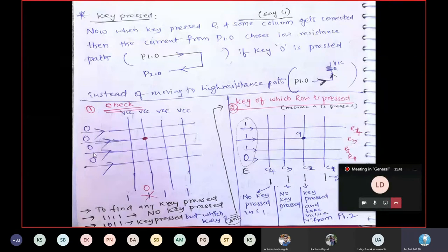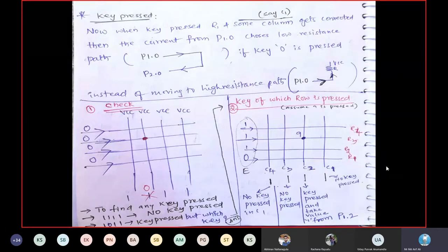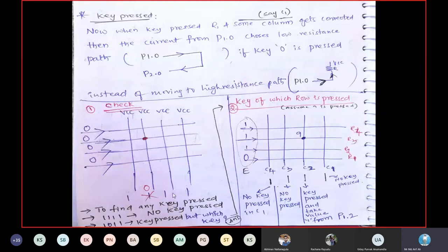Once a key press is confirmed, we need to determine which key. We start guessing row by row — first assuming R1, then R2, then R3, then R4. If the column pattern remains 0xF for a given row, the key is not in that row. In our example, key 9 is pressed, so on C2 we will eventually see a 0. We start verification from row one.